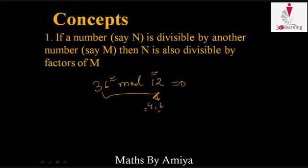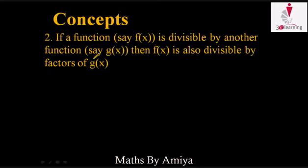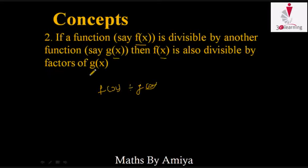Now rewriting the concept in terms of functions — Concept number 2: if we have a function f(x), and f(x) is divisible by g(x), then f(x) is also divisible by the factors of g(x). So if f(x) is divisible by g(x), then f(x) would also be divisible by m(x) if m(x) is a factor of g(x). This is the same as the previous concept for numbers.